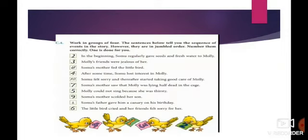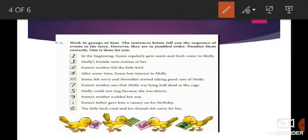C4: Work in groups of four. The sentences below tell you the sequence of events in the story, however they are in jumbled order. Number them correctly, one is done for you. So here some sentences from the story The Canary are given, but they are not in order, they are not in sequence, they are in jumbled order, and you have to arrange them or put right numbers against each sentence in sequence. So let us see what happened in the story first, and then what happened, and what happened at last.